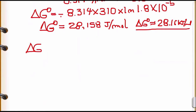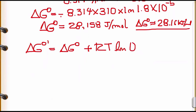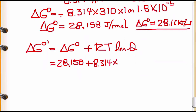To find ΔG°', we use: ΔG°' = ΔG° + RT ln(Q). We already calculated ΔG° = 28,158 J/mol. It's always better to keep everything in joules since R is given in joules. So: ΔG°' = 28,158 + 8.314 × 310 × ln(Q).